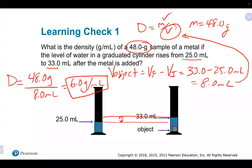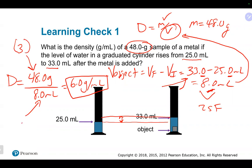The significant figures here are based off of the subtraction step. When we subtract 33.0 − 25.0, we go by decimal places — one decimal place each — so we get 8.0, not just 8. That gives us two sig figs. When we then divide 48.0 g (three sig figs) by 8.0 mL (two sig figs), we end up with two significant figures for the answer: 6.0 g/mL.